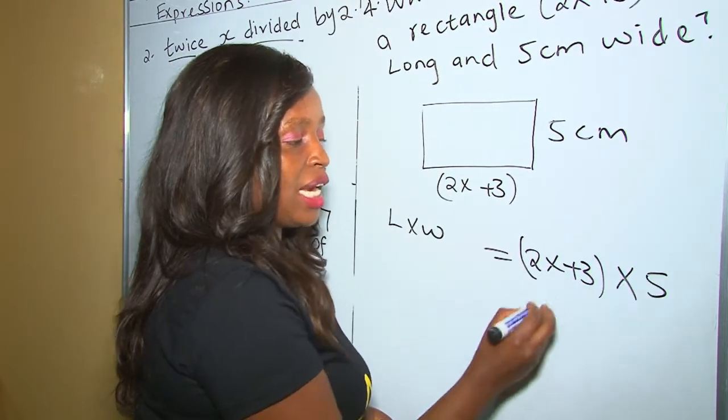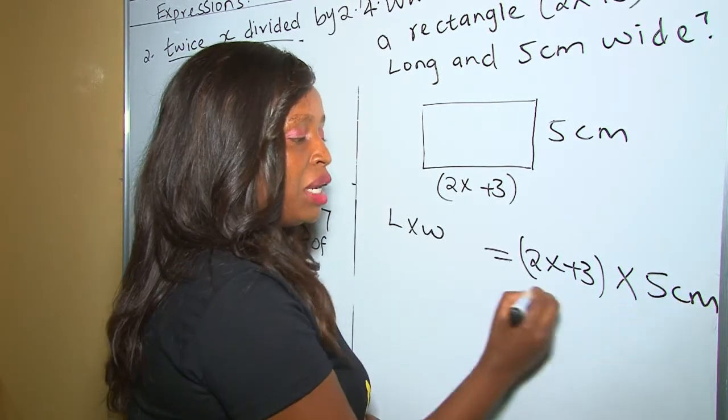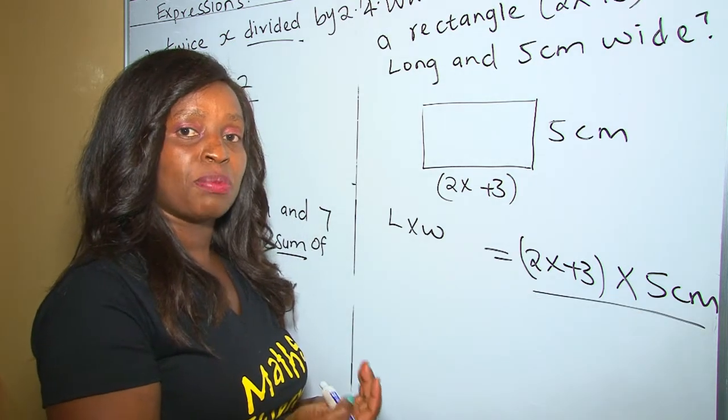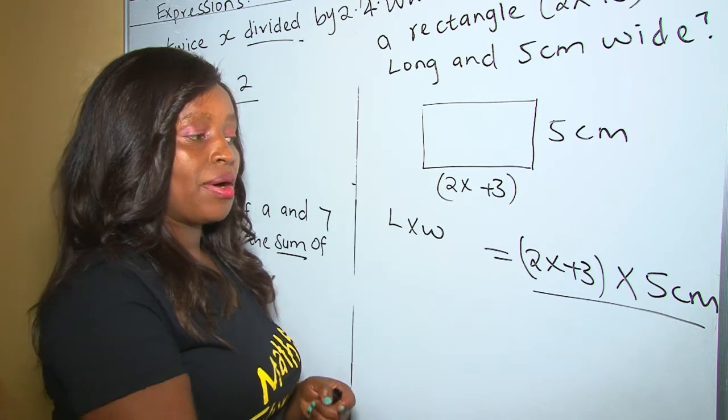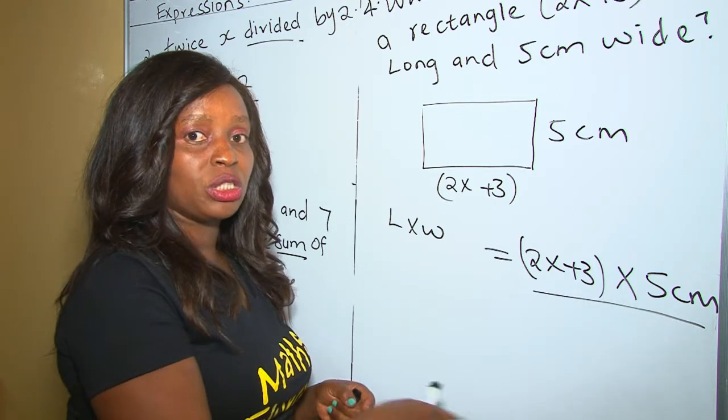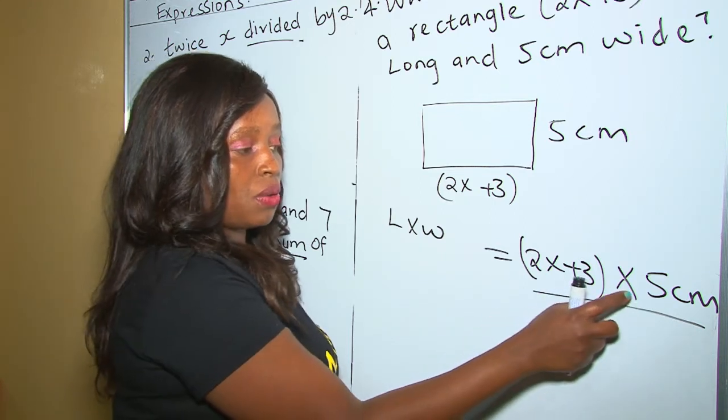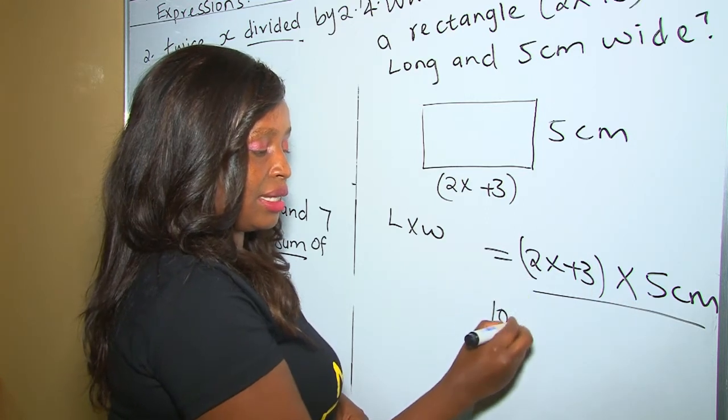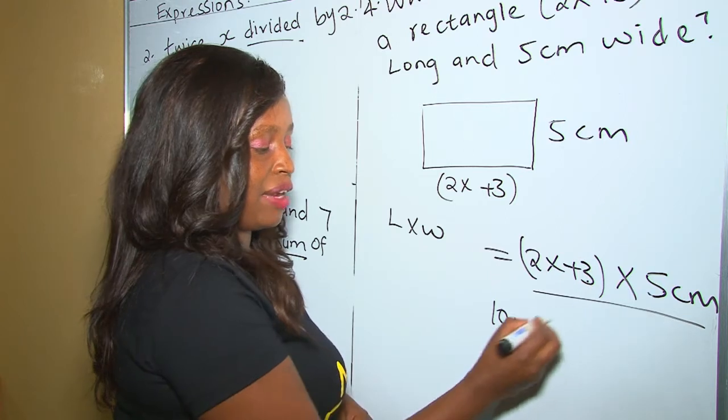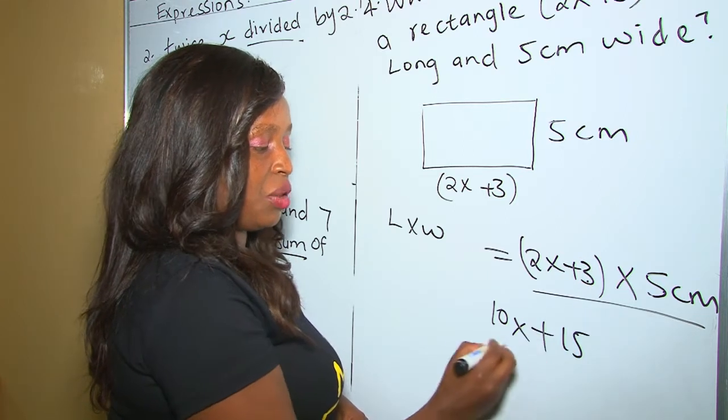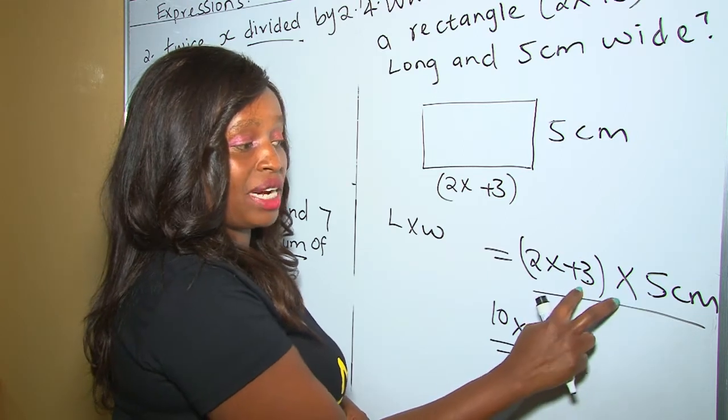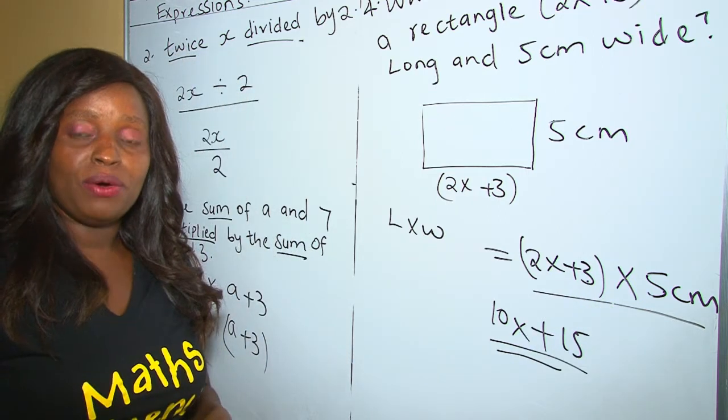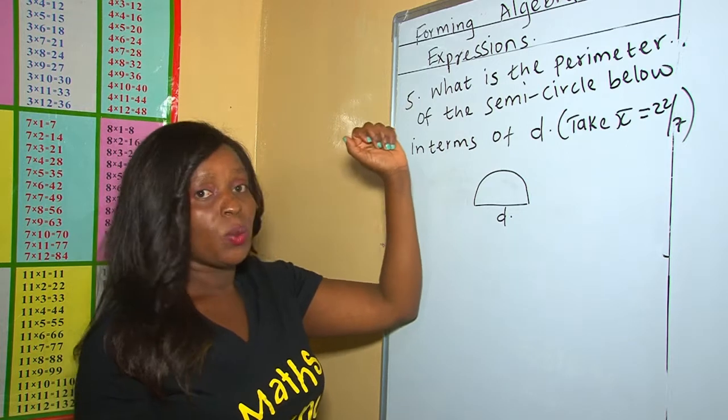Therefore, to apply the formula, our length is (2x plus 3) multiplied by our width, which is 5 centimeters, and we leave our answer like that. Remember, when you are coming up with algebraic expressions, we don't simplify. Or you can as well remove the bracket, but don't add. So you can say 5 times 2 is 10x, then 3 times 5 is 15, then you leave the answer like that, or even you can leave the answer like this.